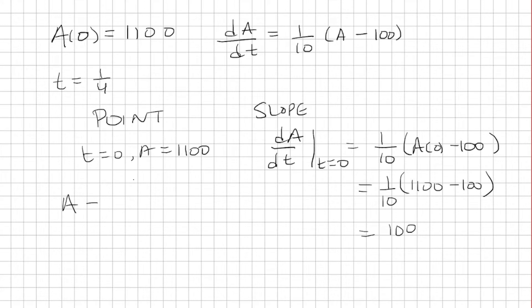So it's going to be y minus y1. Actually we could just use y equals mx plus b, because this is our y-intercept. So the slope is 100, and our y-intercept is 1,100.